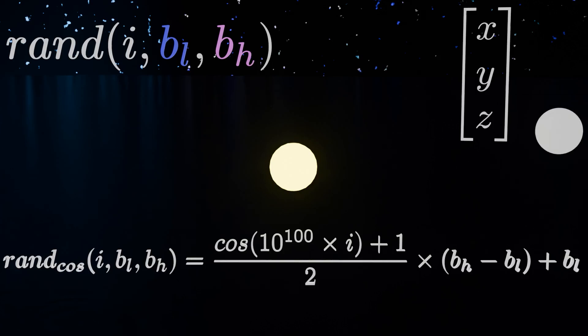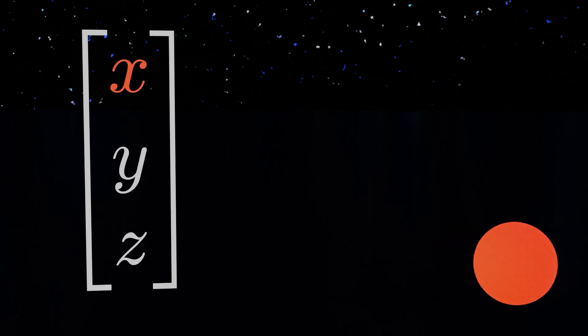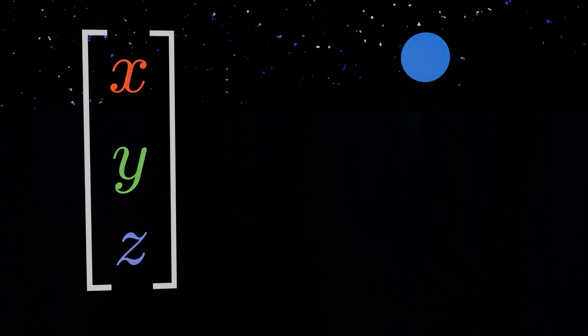But before I demonstrate what it means, let's get to the second tool we'll need, the position of the sphere. So this is even simpler, each ball has its own 3-dimensional vector describing its position. The more right it goes, the higher the x, the more forward it goes, the higher the y, and the more up it goes, the higher the z.